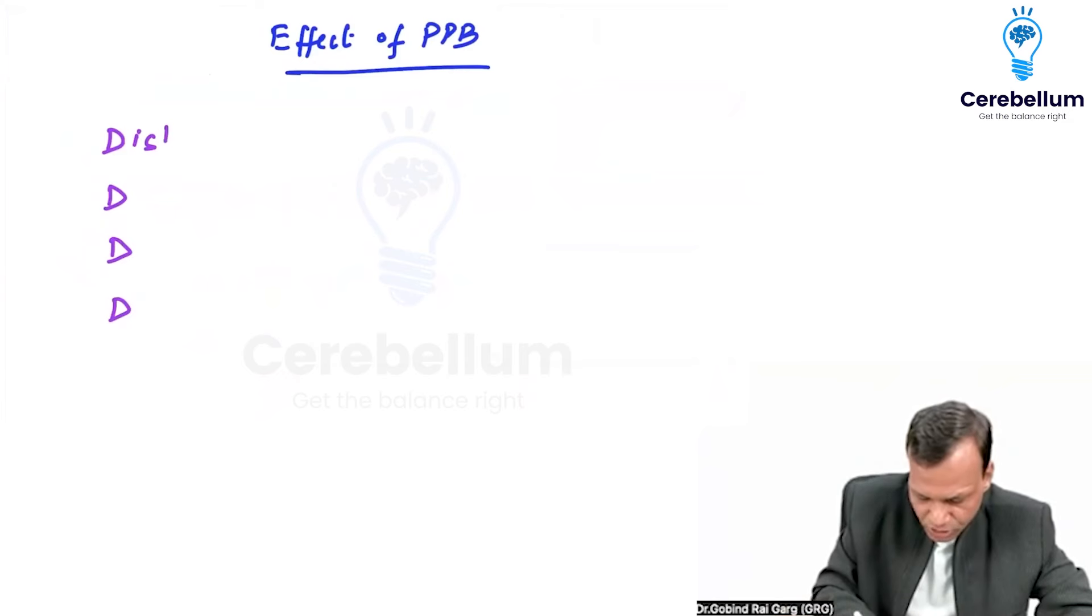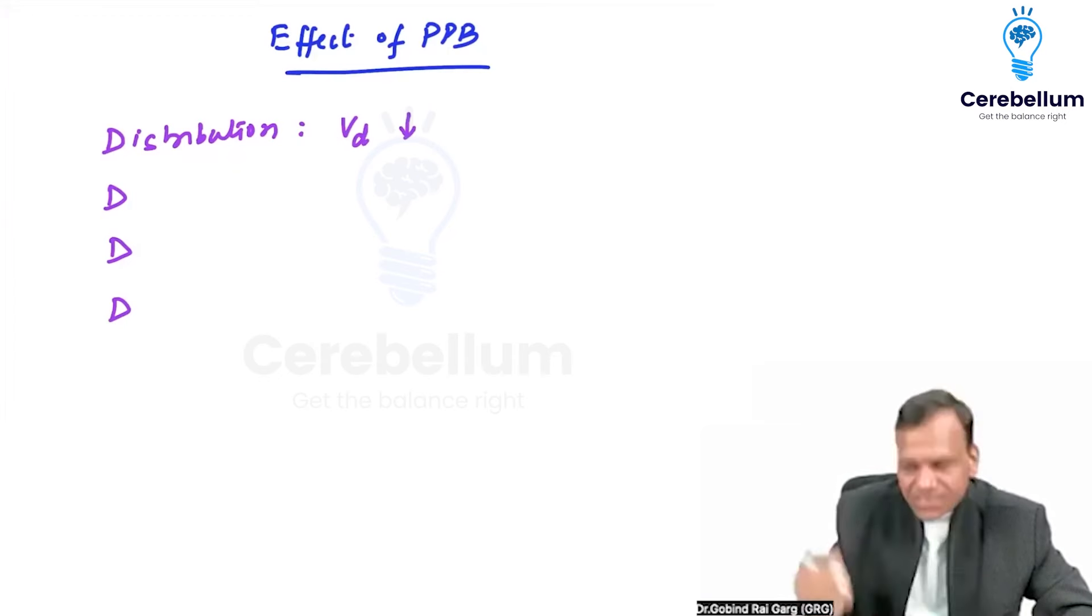The first D is distribution. We just discussed what will happen to distribution if plasma protein binding is high. More binding means less distribution.